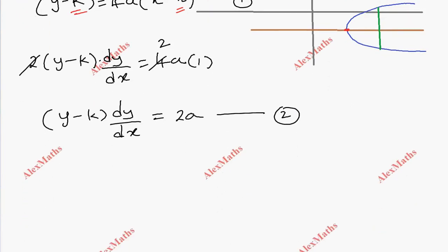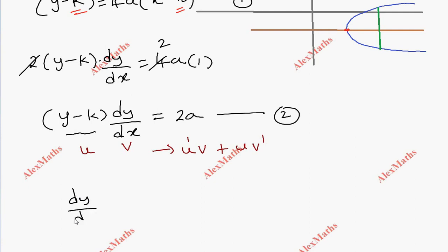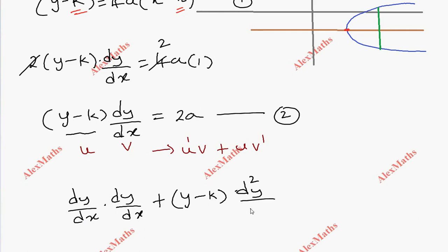Now we differentiate again using the product rule (uv rule): u·v' + u'·v. Here u = (y - k) and v = dy/dx. So u' = dy/dx and we get: (y - k) · d²y/dx² + (dy/dx)² = 0 after applying the differentiation.